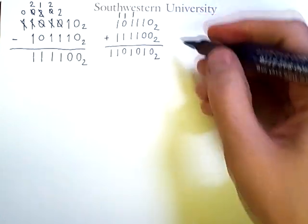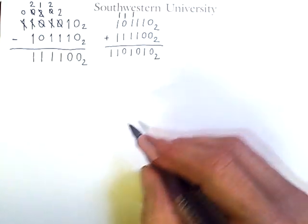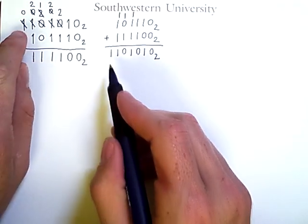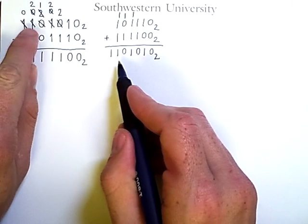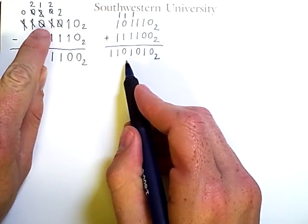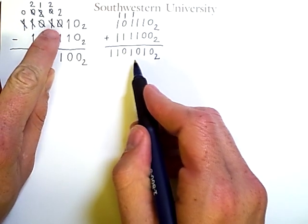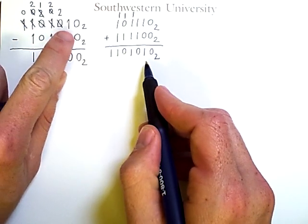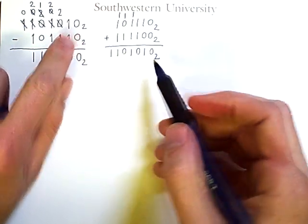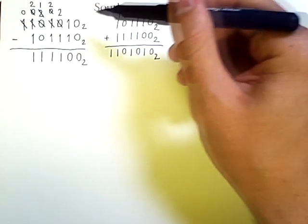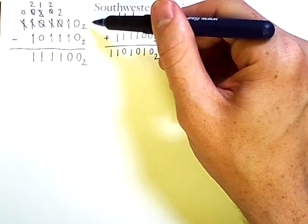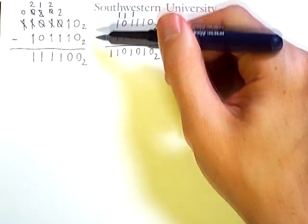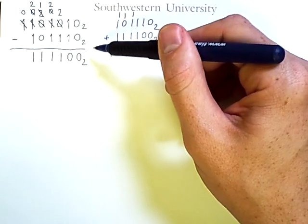And this result is indeed the same: 1, 1, 0, 1, 0, 1, 0 is the original number that was here. So this subtraction works.